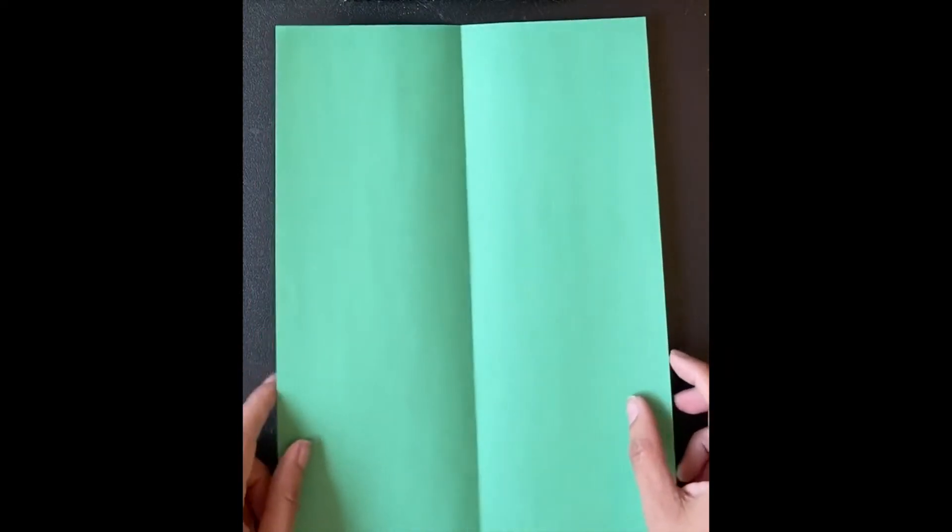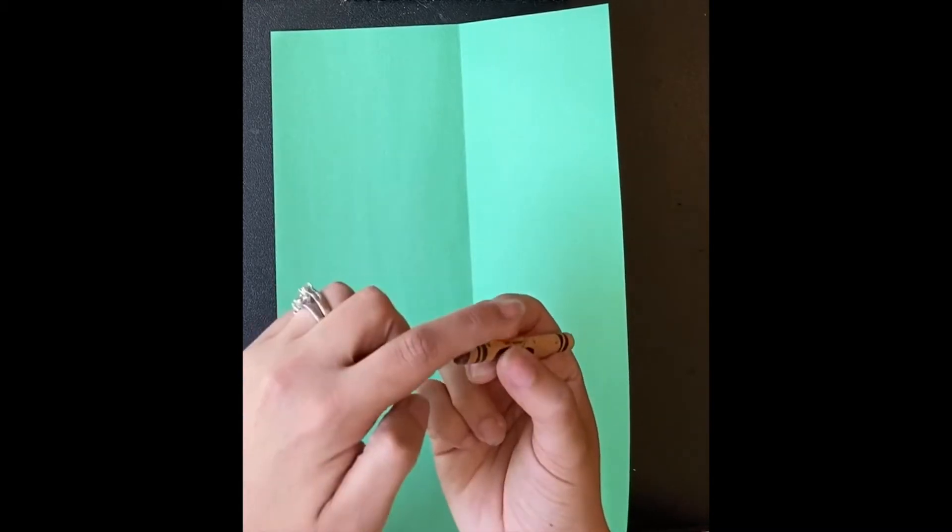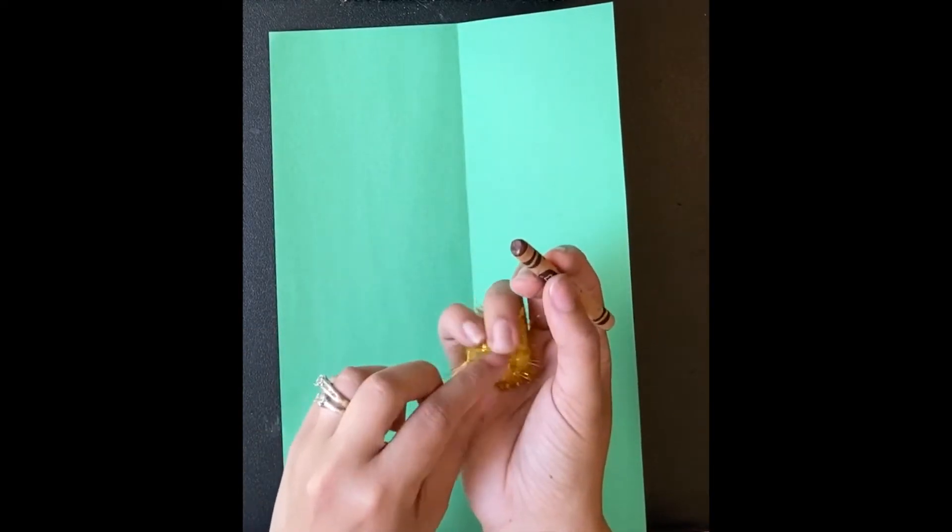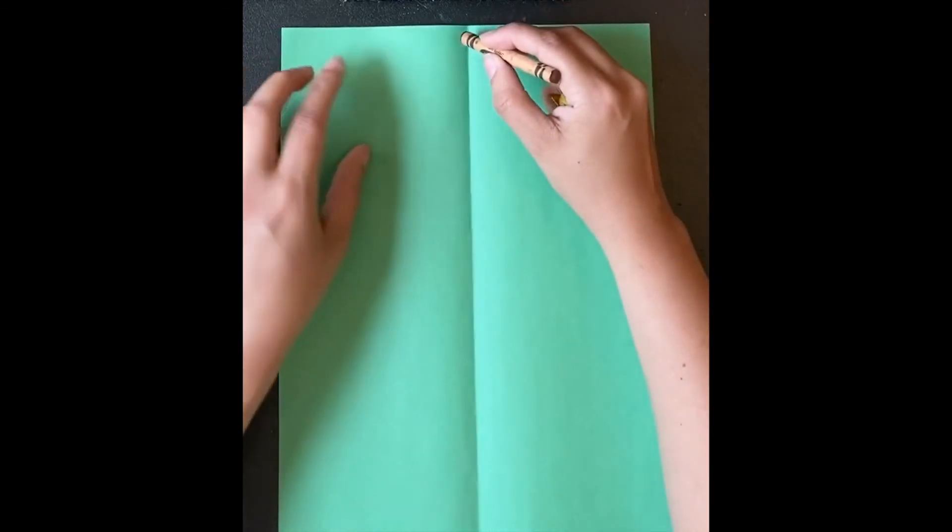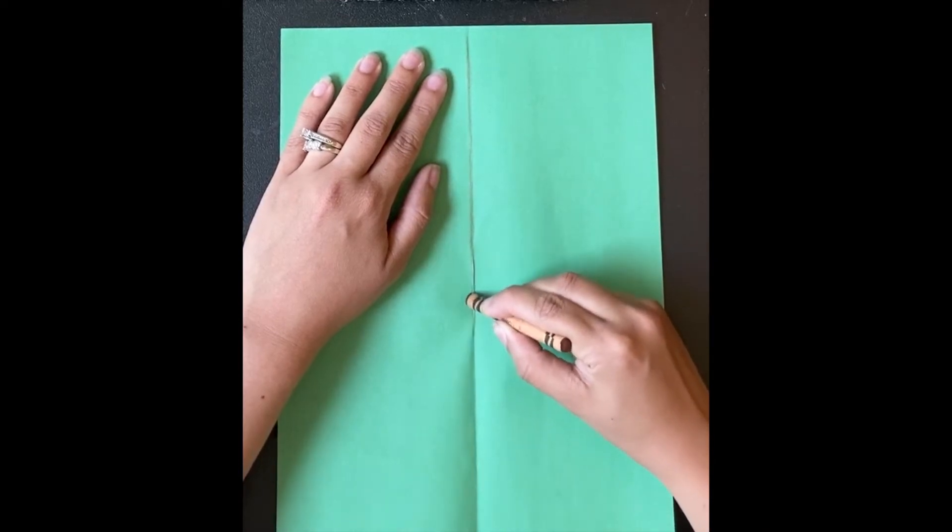Now our next step is to draw a line so we know exactly where to cut. Remember we hold our crayon with our thumb, index, and middle finger and we can hide our treasure so our pinky and ring finger are tucked in. Next you're going to draw a line on your crease.